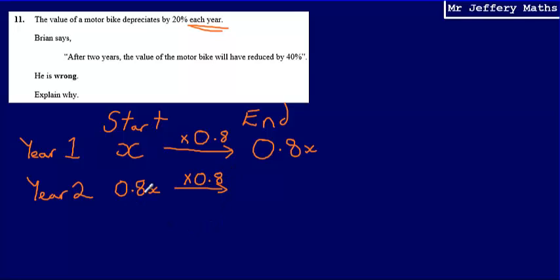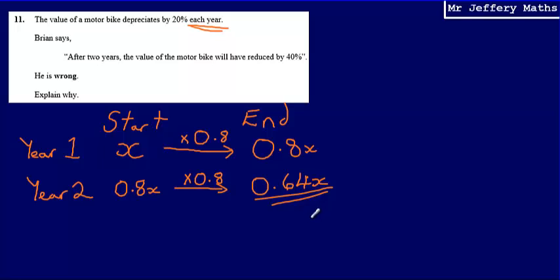So now I'm doing 0.8X multiplied by 0.8, and that gives me 0.64X. So at the end of the second year, after two years, the value of the bike will be 0.64X.